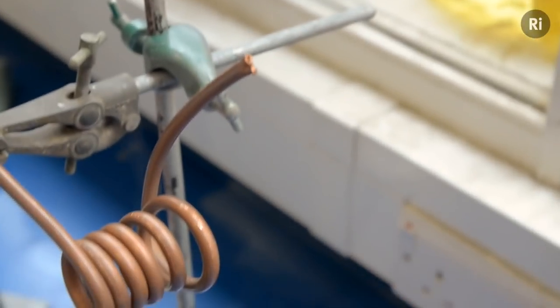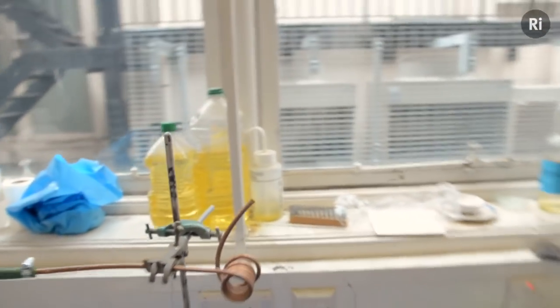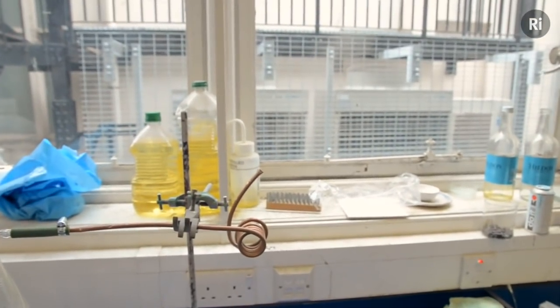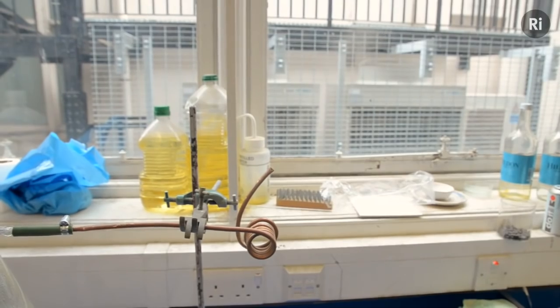Okay, so the thermometer's reading quite a lot less than a hundred degrees, but that's probably not really a surprise. We've got this huge coil which, at the moment, is acting like a condenser, so we're probably not actually getting water above a hundred degrees out of the end, which is where the blowtorch comes in.